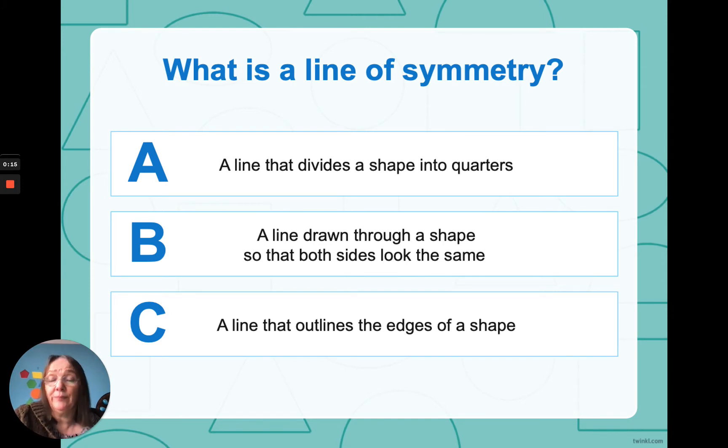So what is a line of symmetry? Is it a line that divides a shape into quarters? Is it a line that is drawn through a shape so both sides look the same? Or is it a line that outlines the edges of a shape? Well, I'm going to tell you it's a line drawn through a shape, so both sides look the same.